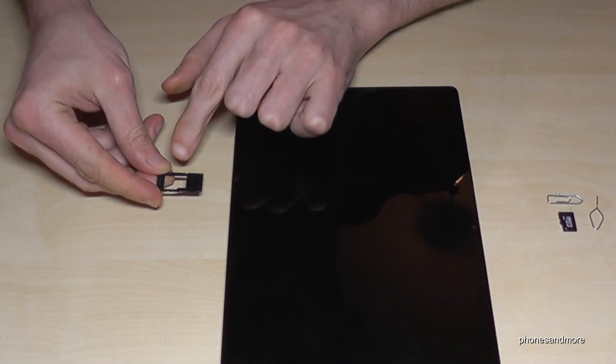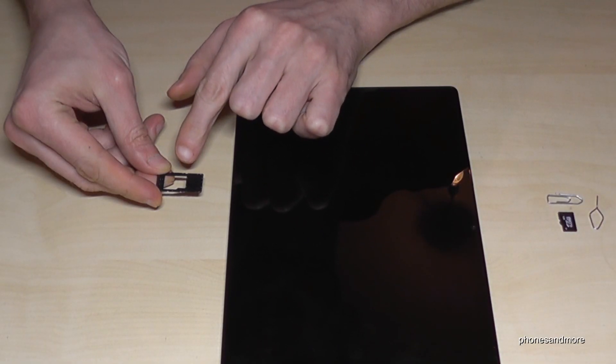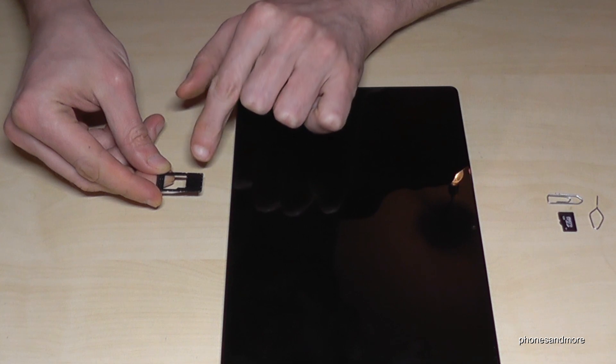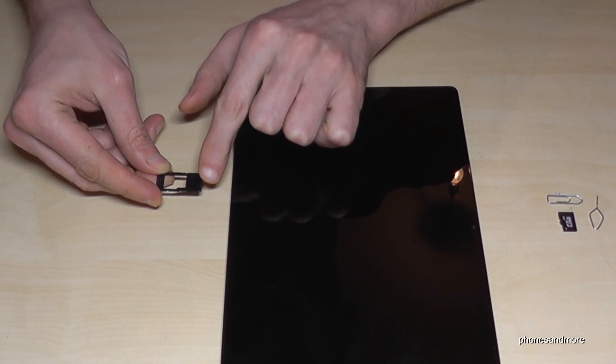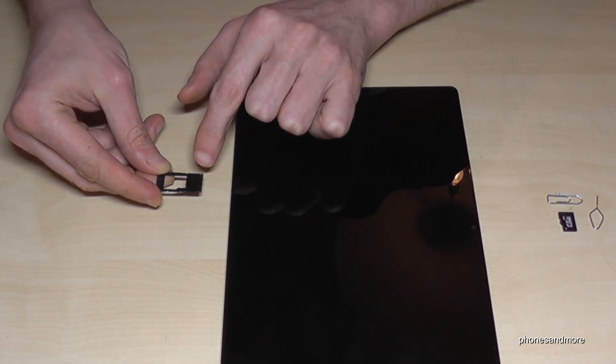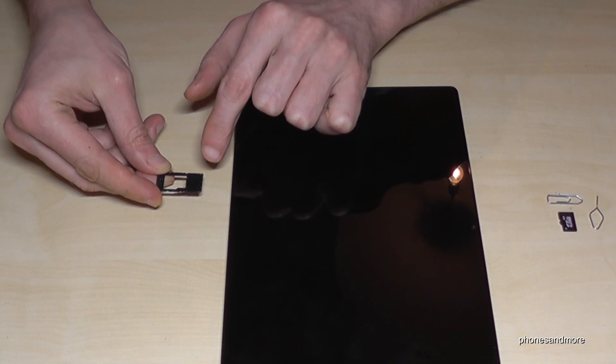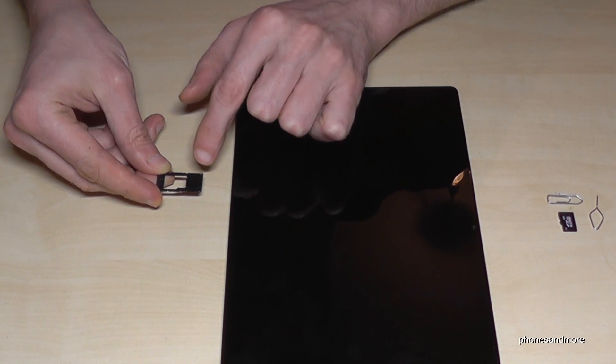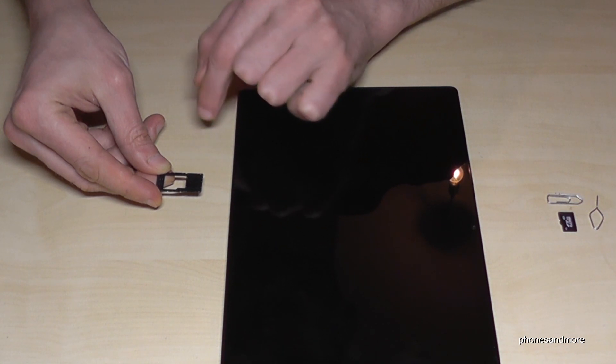Here on the SIM tray you can insert the microSD card. I'm having the Wi-Fi version, so if you also have the Wi-Fi version, you'll see plastic here in front. If you have the SIM version, the LTE version, then you can also insert a SIM card next to the microSD card.